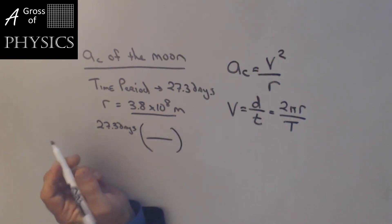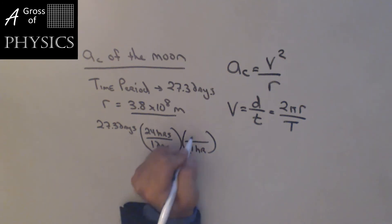So 27.3 days. Now this is going to be a double conversion. One day is 24 hours, and then one hour is 3600 seconds. So that would mean days cancel, hours cancel, and we're left with seconds. So what I'm going to do is take my calculator: 27.3 times 24 times 3600, and we get quite a large number in seconds. It's 2,358,720 seconds.